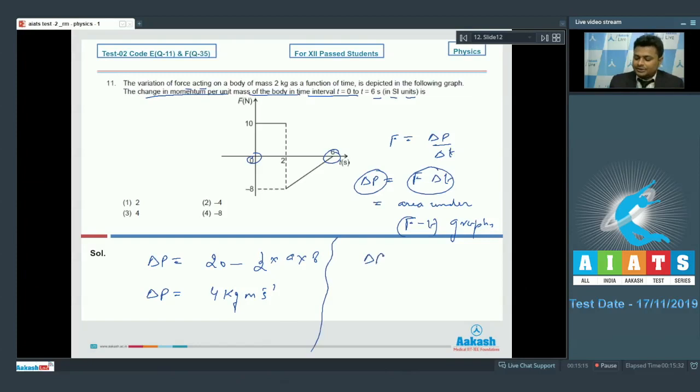Now we have to calculate change in momentum per unit mass, that is delta p upon m. Put the value of m, we have delta p by m equals 2. Kilogram will cancel out, simply meter per second. So 2 will be the correct answer and we will go with option number 1 only.